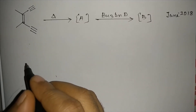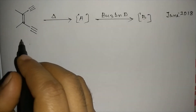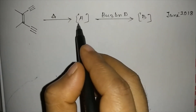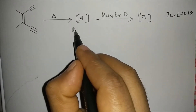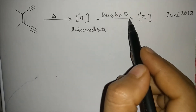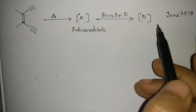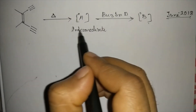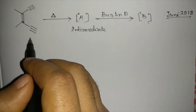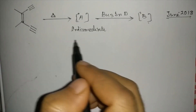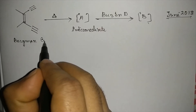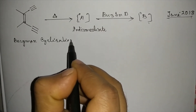Hi students! Today I have an interesting question. This substrate, if it is heated, will form an intermediate A. This intermediate, when treated with Bu₃SnD, gives product B. This question came in June 2018. We have to determine what A and B are. This type of cyclization is known as Bergman cyclization.